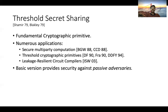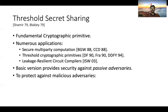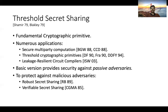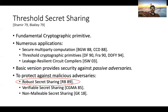However, the basic version defined previously provides security only against passive adversaries. In order to protect against the stronger malicious adversaries, there have been many strengthenings of threshold secret sharing proposed. Some of these include robust secret sharing, verifiable secret sharing, and the more recent non-malleable secret sharing. The focus of this work is on robust secret sharing.